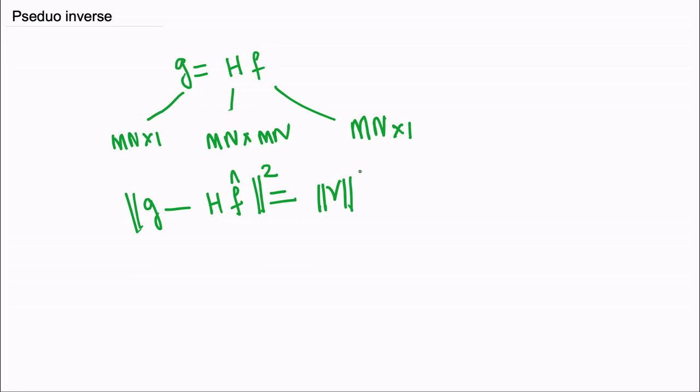I am taking the difference between g and h f hat, that is the estimated image, then I am finding the Euclidean norm, that is I am finding the sum of squares of every term of this particular vector, then I am assigning that to r squared. If this estimation is done very well or if this estimation is good, then you can say that this r squared should be as minimum as possible.